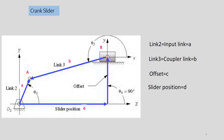For the four-bar crank-slider, the driver link is link 2 with length A, and link 3 is the coupler link with length B. The distance between the slider and the reference axis is considered the offset, denoted as C. The distance from the fixed point to the slider position along the reference axis is the slider position, denoted as D. As with the four-bar linkage, all angles in the crank-slider are measured counterclockwise using the right-hand rule.